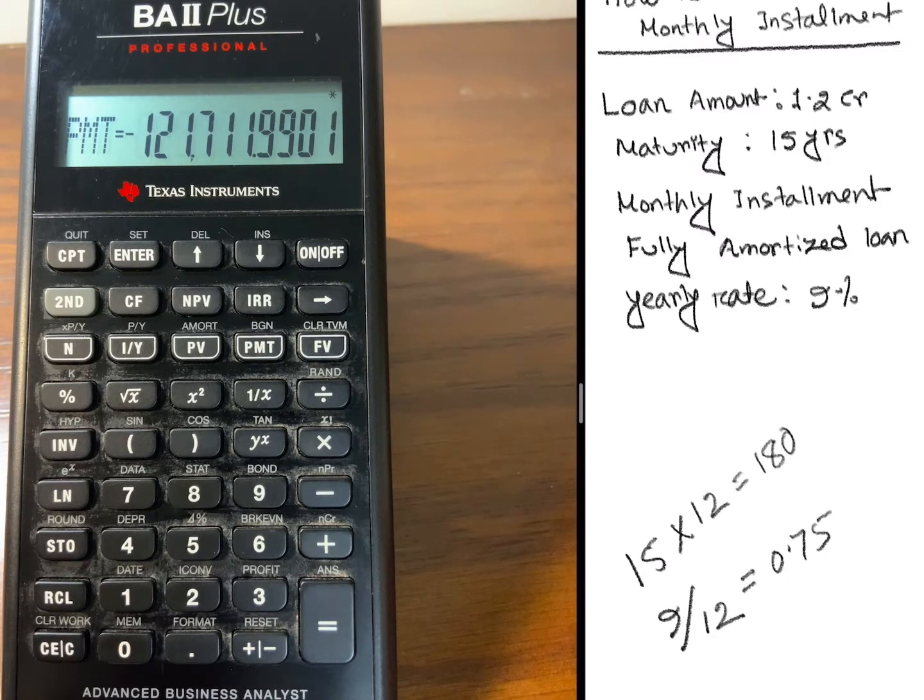So if you take a loan of 1.2 crore taka today at 9% yearly interest rate for 15 years, your monthly installment amount will be 121,712 taka. That's how we can calculate the monthly installment using the Texas Instrument BA2 Plus Professional Calculator. If you have any questions, feel free to comment. Thank you for watching the video.